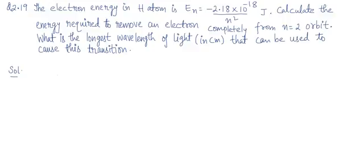Problem 2.19: The electron energy in hydrogen atom is E_n equals minus 2.18 into 10 to the power minus 18 divided by n square joules per atom.